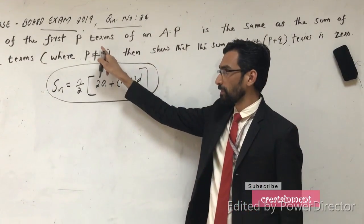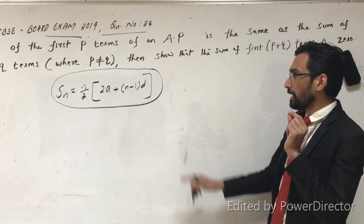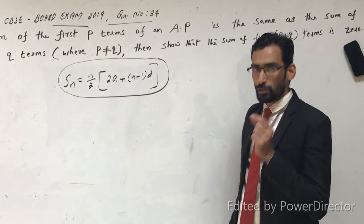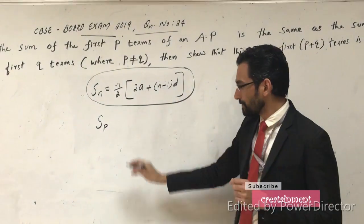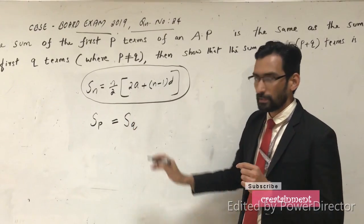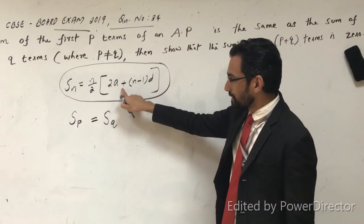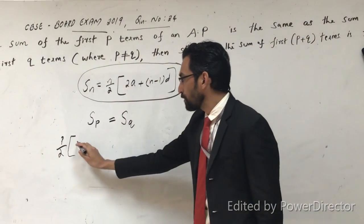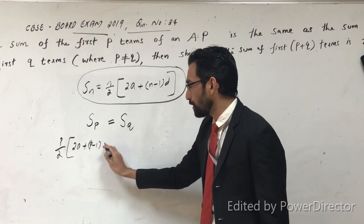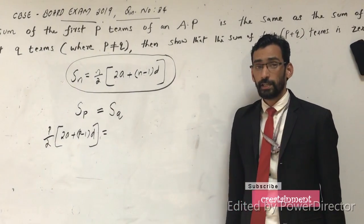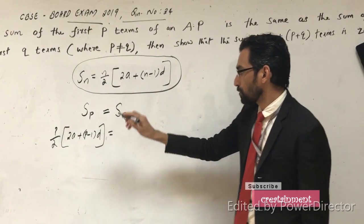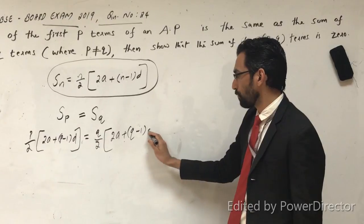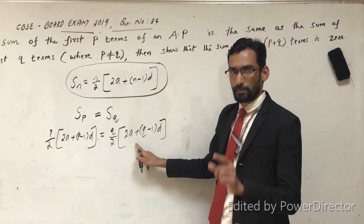In this question, it is given that the sum of P terms is the same as the sum of Q terms. So we can write Sp equals Sq. Using this equation, we can write: P by 2 into 2a plus P minus 1 into d equals Q by 2 into 2a plus Q minus 1 into d. This is by the given condition that Sp and Sq are equal.